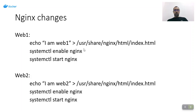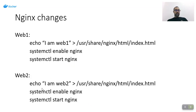For nginx I made some changes just to identify which nginx web server is replying to traffic. In web1 I echoed 'I am web1' into /usr/share/nginx/html/index.html, enabled nginx to support restarting the container, and started the service. I did the same for web2 but echoed 'I am web2'.